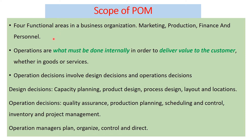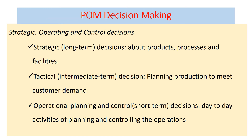Here is the scope of production operation management — you can read that by yourself. The important thing is that production operation management decision-making can be categorized into three levels, just like the levels of managers. The senior level managers conduct strategic decisions, which are long-term decisions.